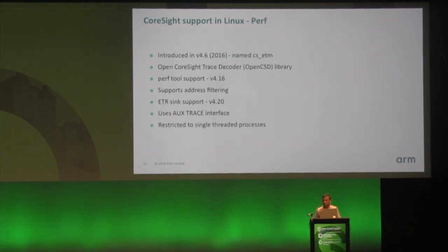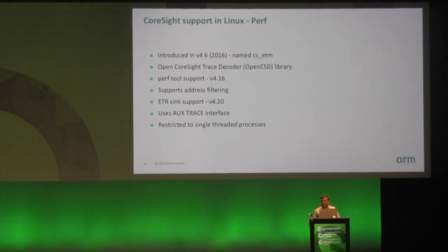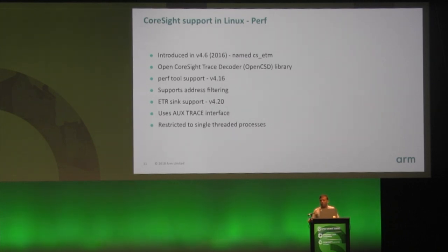That's where Perf comes in. Perf support was added in 2016 and available since kernel version 4.6. But the Perf tool support was still missing, mainly because we didn't have an open library to integrate with Perf to decode the ETM packets. Now we have this library — it's called OpenCSD, the OpenCoresight Trace Decoded Library, hosted on GitHub and maintained by Leonardo, under BSD3 license so anybody can use it. The Perf tool support was finally merged in 4.16. The ETR sync support was added more recently and is going to be in 4.20.